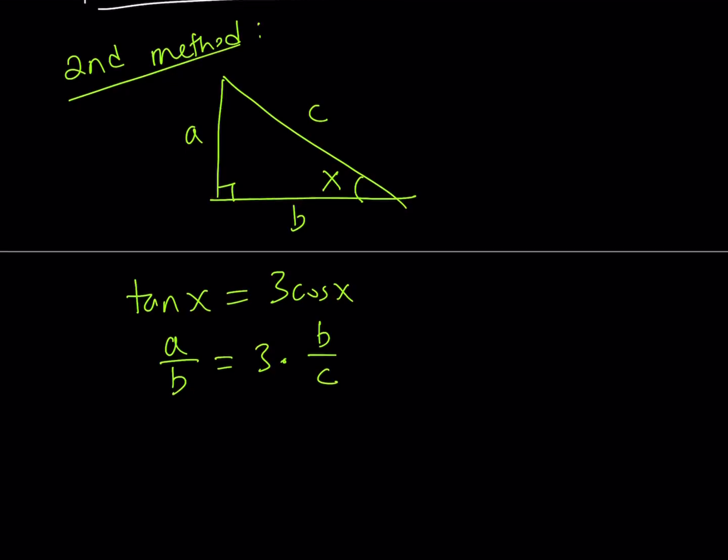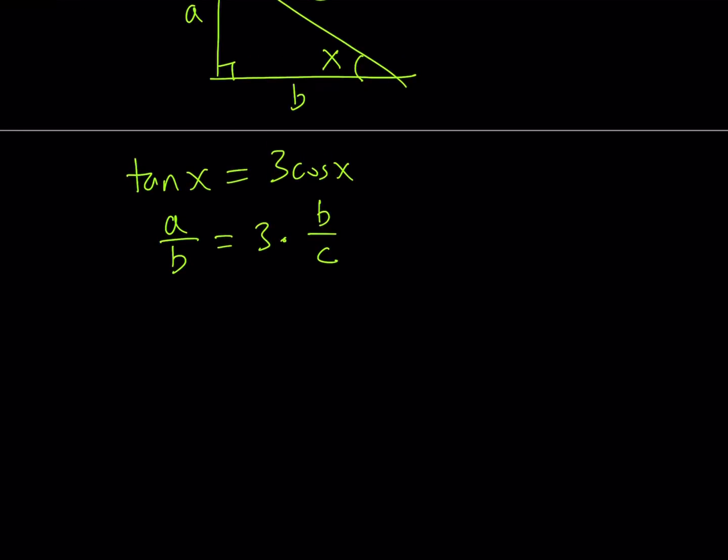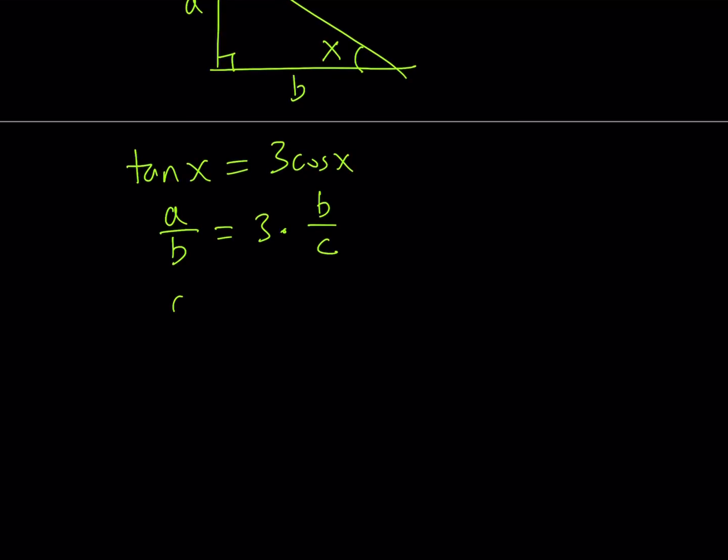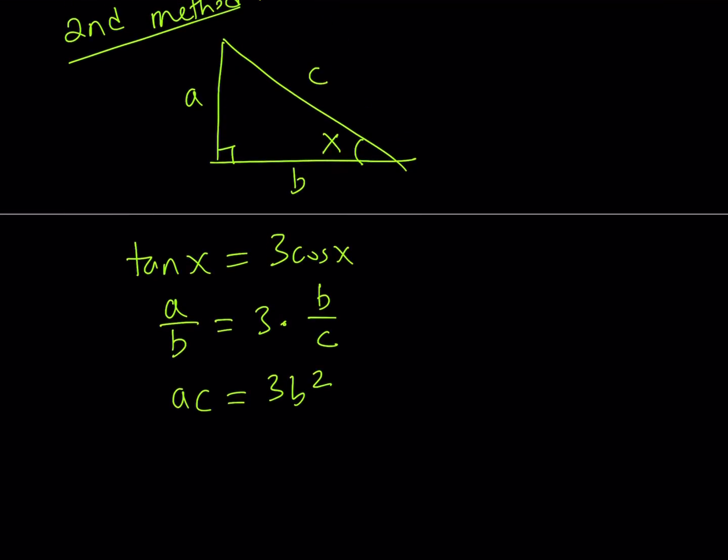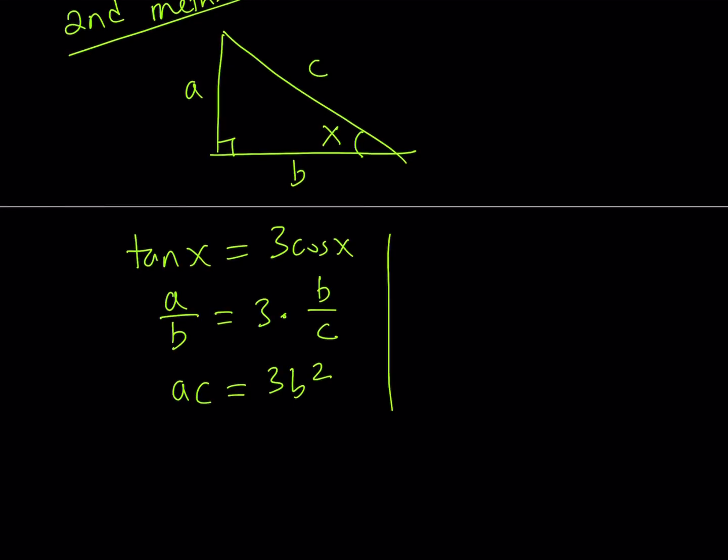Now, this gives us something. What does it give us? Well, let's simplify this a little bit. If you do cross multiplication, you're going to get something like ac equals 3b squared. Now, this is a single equation, and I have three variables, so it's not really going to lead anywhere. And we're looking for sine x, so we're looking for a over c here, but you can't really find it directly from here. So we have to use the Pythagorean theorem. And remember, in our first method, we also used it, the trigonometric version of that. But this time, we're going to use it like this.